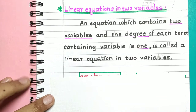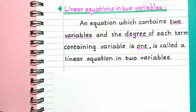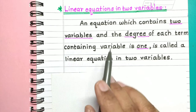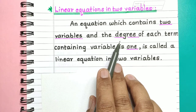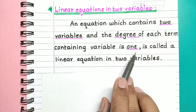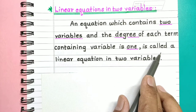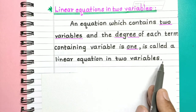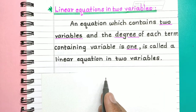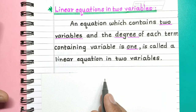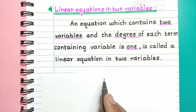An equation which contains two variables and in which the degree of each term containing a variable is 1 is called a linear equation in two variables.